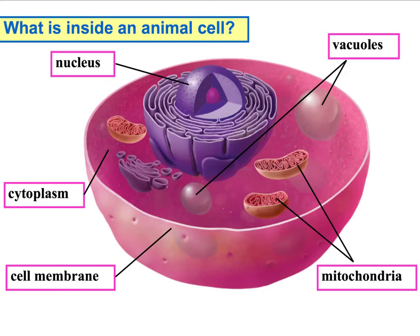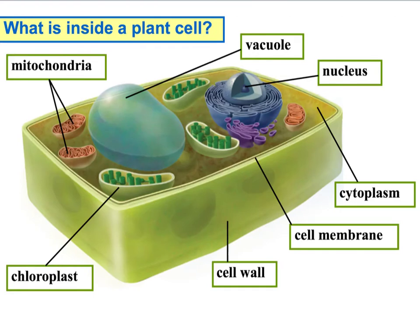Let's compare the animal cell and its organelles to the plant cell. The plant cell has many of the same structures as the animal cell — the mitochondria, vacuoles, nucleus, and cytoplasm — but you'll notice it's a different shape, a different color, and it has a few extra organelles.